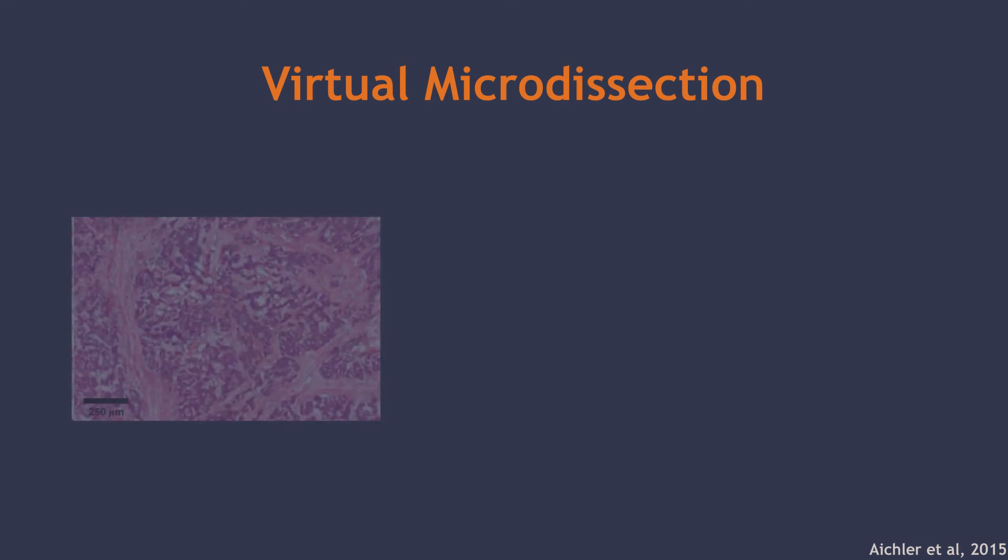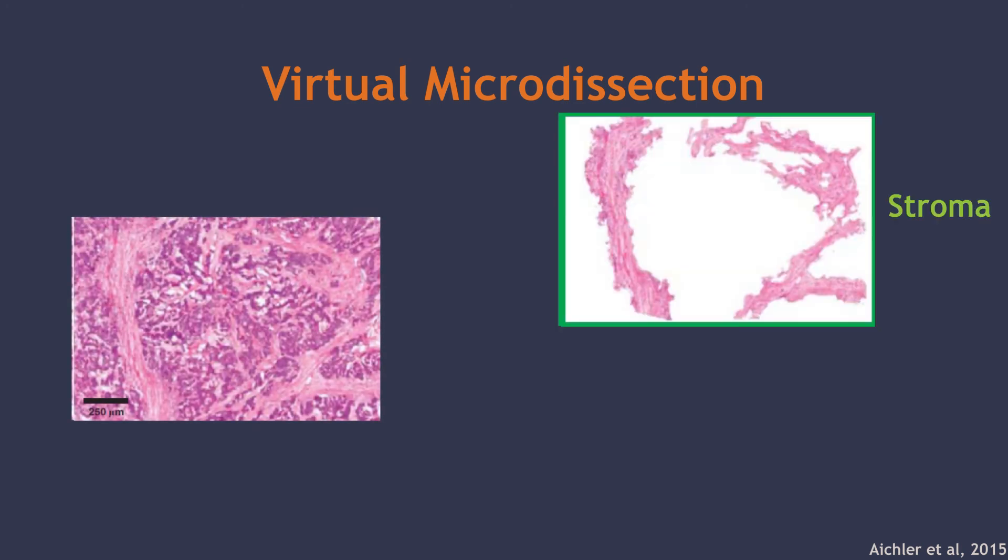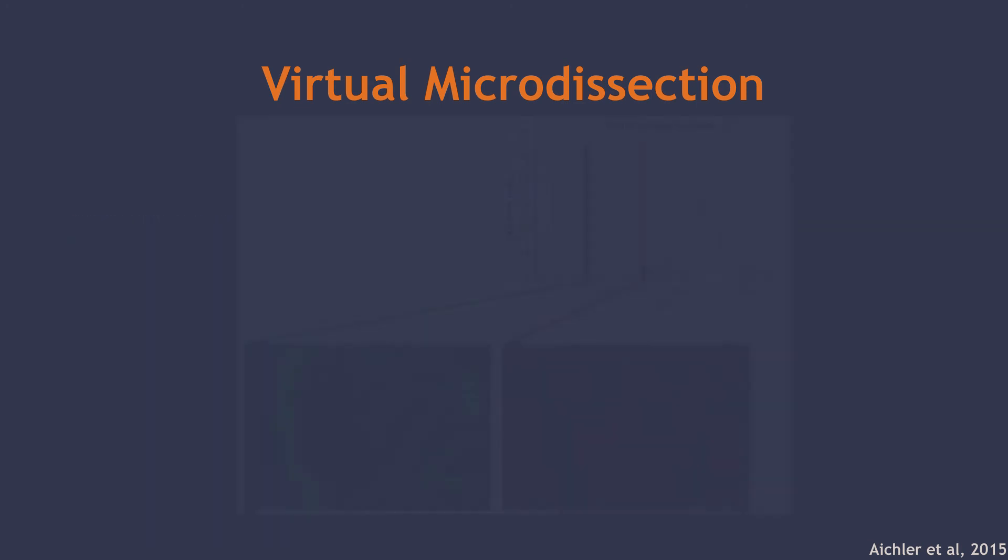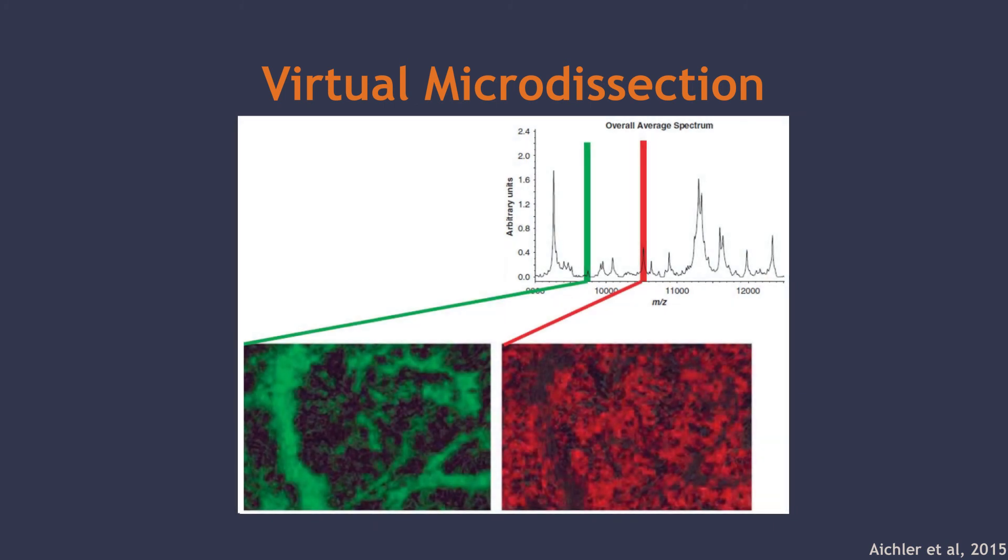Researchers are beginning to discover more applications for MALDI-MSI. In this study, a data manipulation technique called virtual microdissection was done to separate cancer and stroma tissue. First, the tumor sample was imaged by MSI, and the overall average spectrum was calculated from all spot mass spectra.